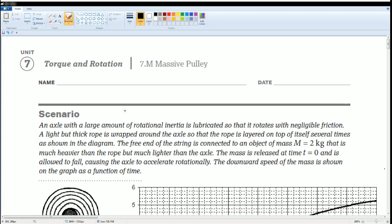Welcome. This is the AP Physics workbook solution. Here we have unit 7 torque and rotation. This section is 7.M, massive pulley.